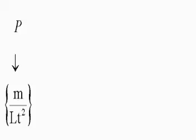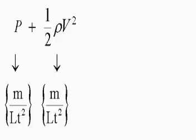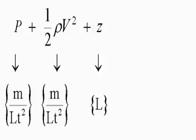In other words, you can't add apples and oranges. Consider Bernoulli's equation, for example. Static pressure p is a force per unit area with dimensions of mass over length times time squared. The dynamic pressure, one-half rho v squared, has to have the same dimensions. Adding the hydrostatic head z doesn't work because it isn't dimensionally consistent.